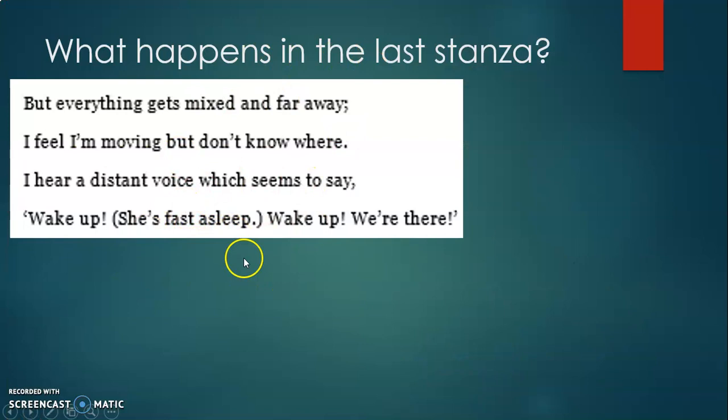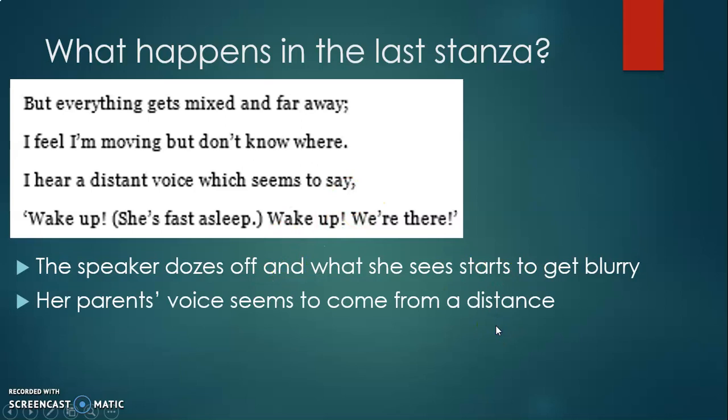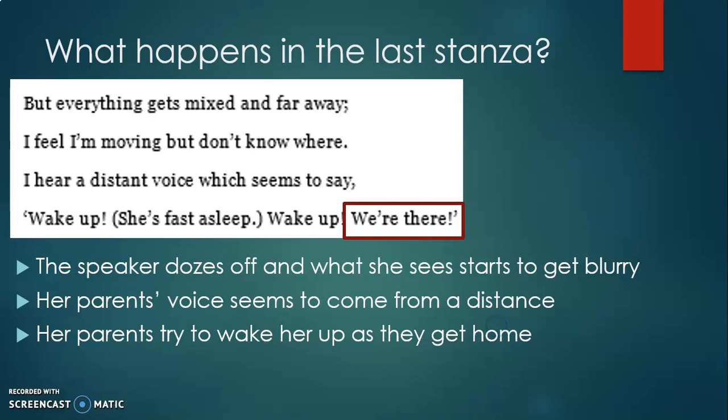In the last stanza, we have 'Wake up, wake up, we are there' — they've arrived home and the parents are trying to wake the speaker up. As for the bracketed line 'she's fast asleep' — there are multiple interpretations, but likely one parent (e.g., the mom) says 'wake up, wake up' and the other (e.g., the dad) says 'she's fast asleep' as an aside — which is why it's in brackets. And that's all — I hope this analysis helps you understand more about the poem.